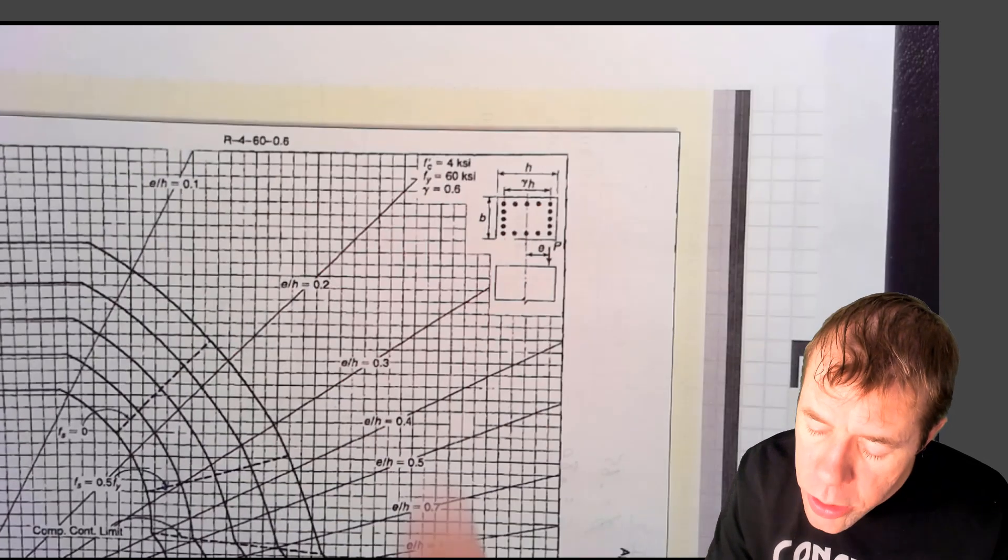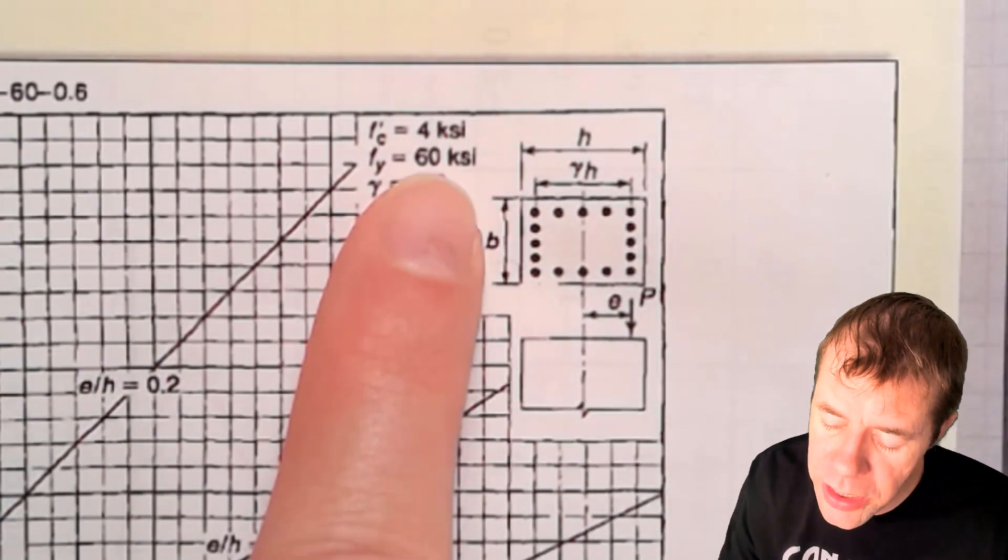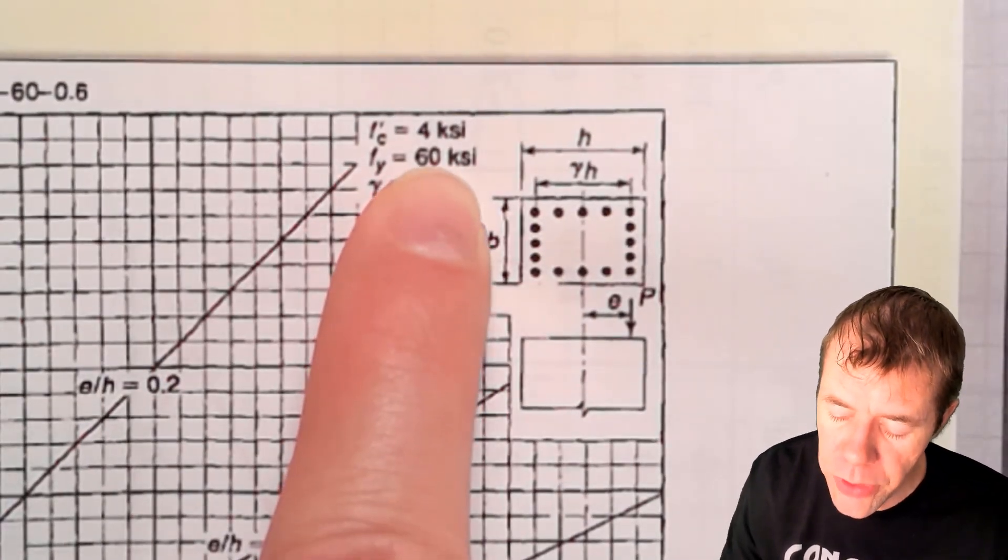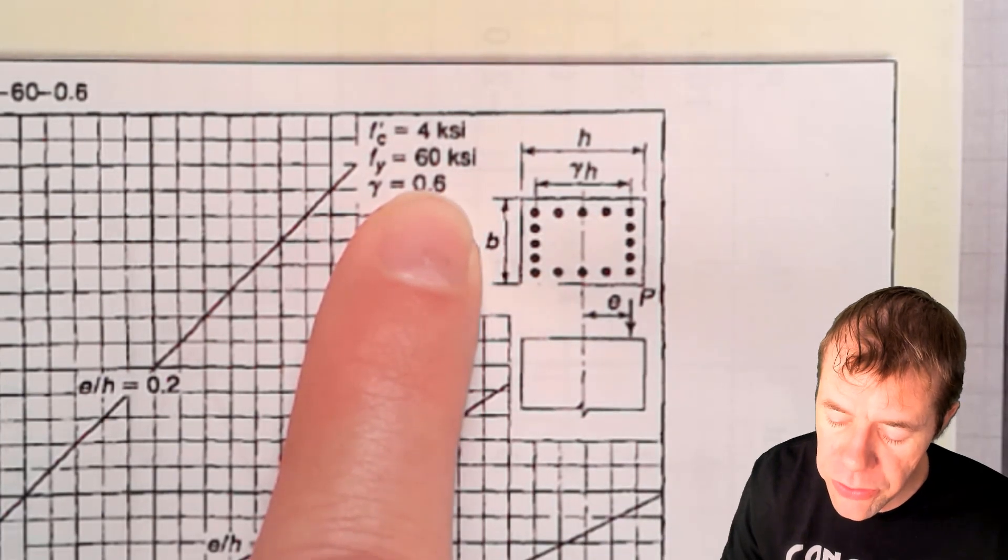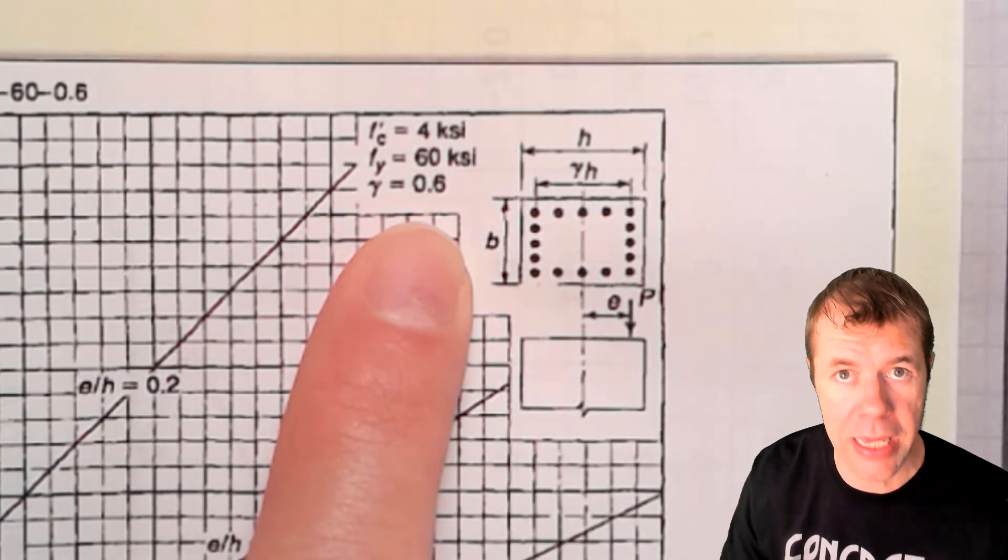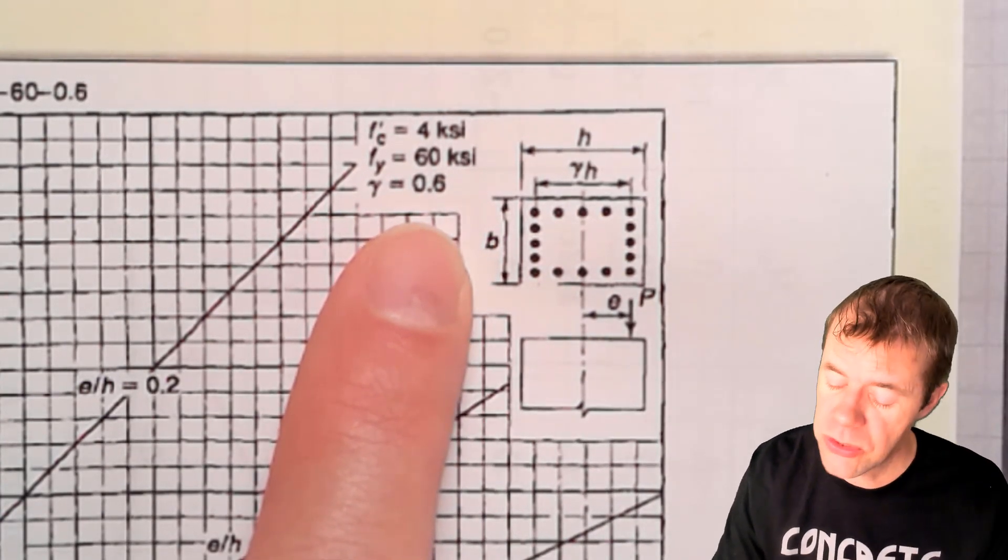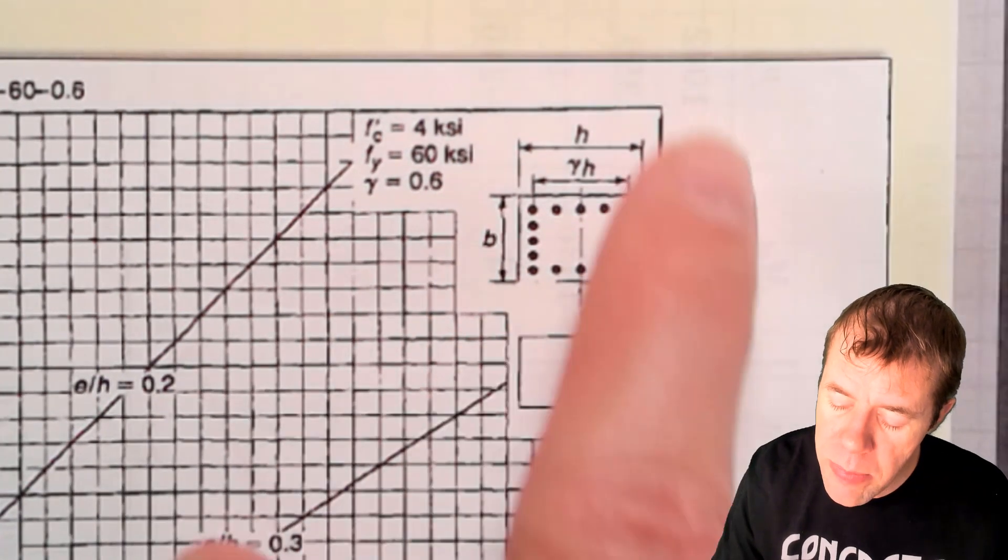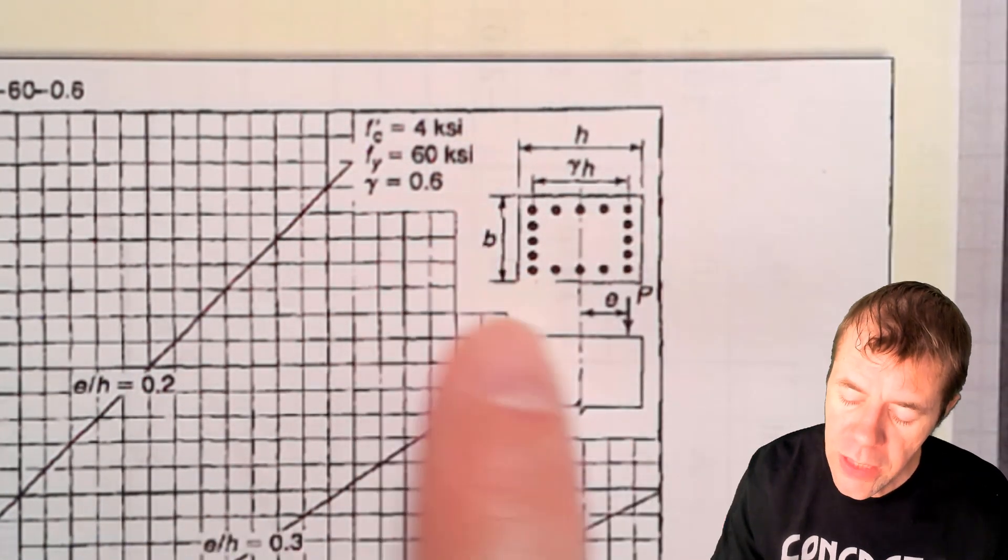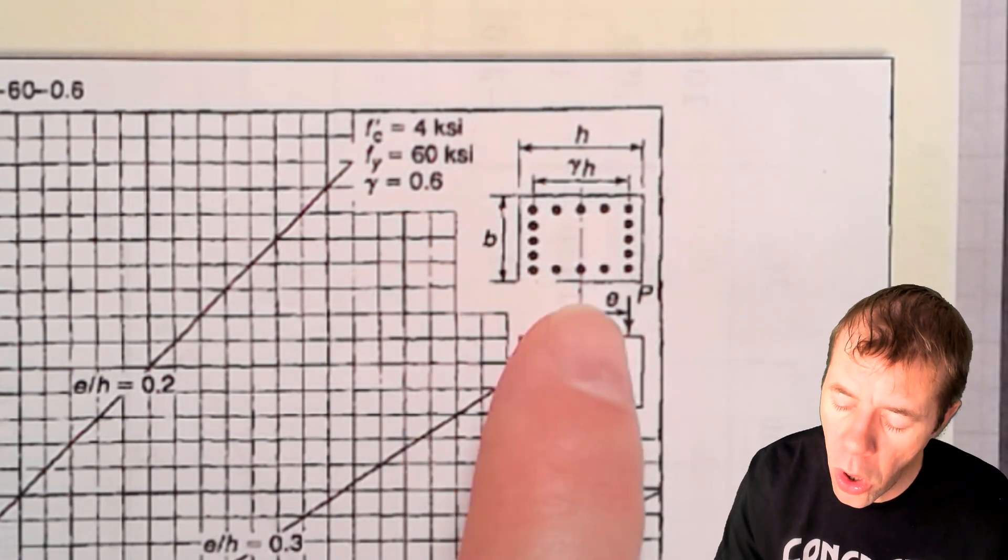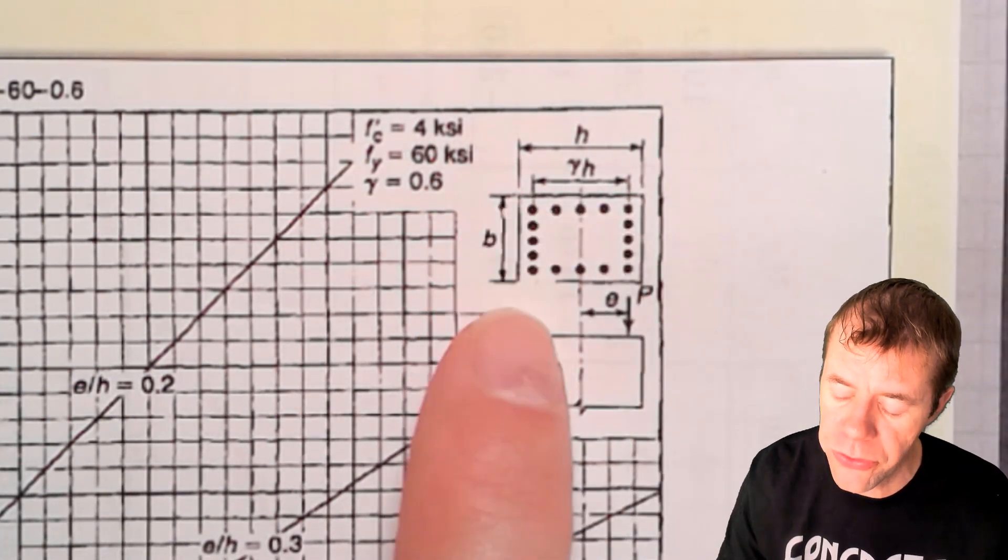Now, how you decide is you look up here. You look and see what your concrete strength is, what your steel strength is, and what this gamma is. I'll get to gamma in just a second, and you also look and see to make sure this matches your cross section. This is a rectangular cross section that has steel all the way around the outside.